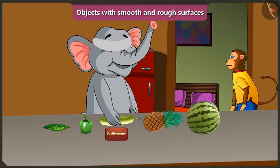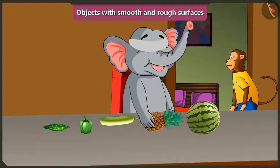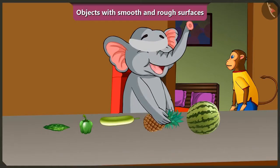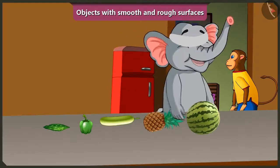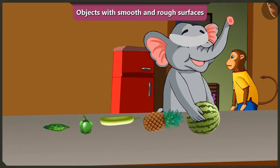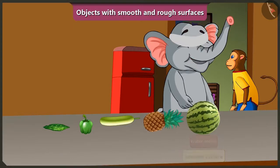And this is a bottle gourd — this too has a smooth surface. Absolutely right Appu! Come on, now try and feel these fruits. My hand is not sliding easily on this surface — this is a pineapple with a rough surface. And my hand is sliding easily on this surface, so this is a watermelon with a smooth surface.